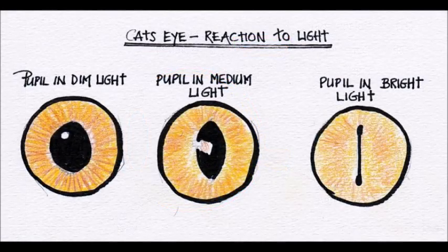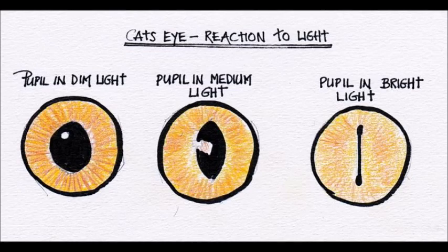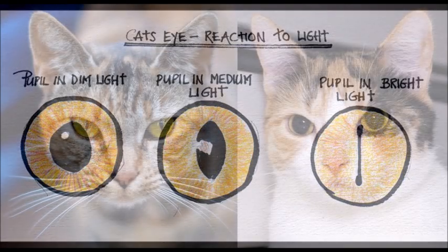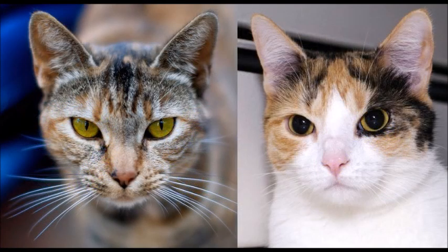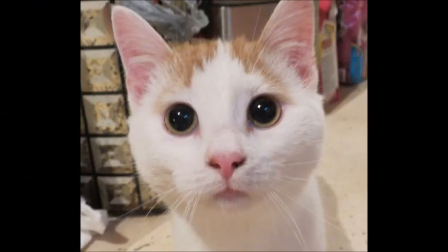Cat pupils are vertical and slit shaped. A slit shaped pupil has more flexibility over its pupil size, which allows the eye to see clearly in extreme light environments, such as during bright daylight and night time. In bright light, cat pupils contract into very narrow lines, while in dim light, they can expand into almost circular shapes that cover most of the eye.